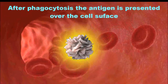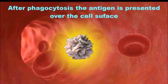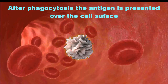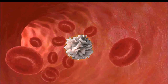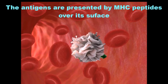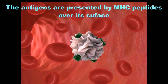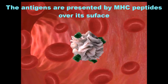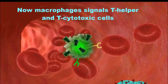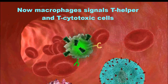After phagocytosis, the antigen is presented over the cell surface of macrophages. The antigens are presented by MHC — major histocompatibility complex — peptides over the cell surface. The macrophage then signals T-helper cells and T-cytotoxic cells.